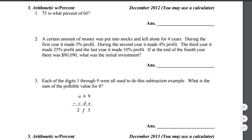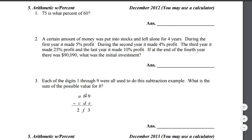Each of the digits 1 through 9 were all used to do this subtraction example. What is the sum of the possible values for b? So here we have this diagram — basically someone doing a subtraction problem — and we're given that every digit 1 through 9 was used. So 2, 3, and 9 were used, and a, b, c, d, e, and f all need to be different digits.